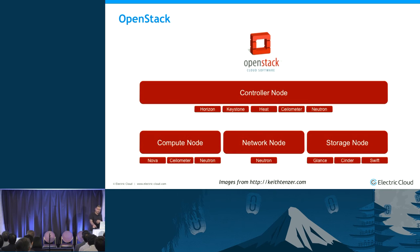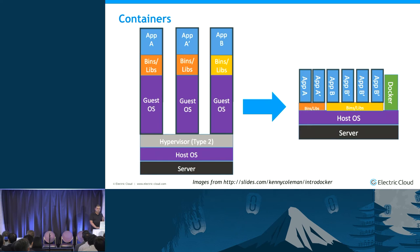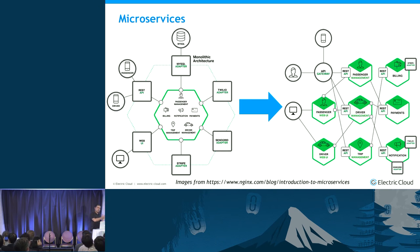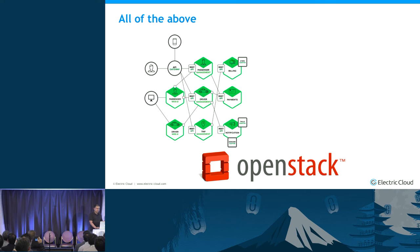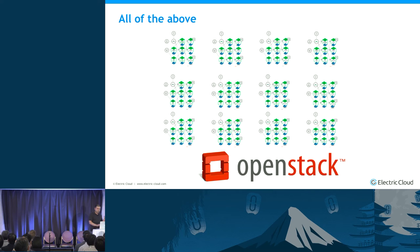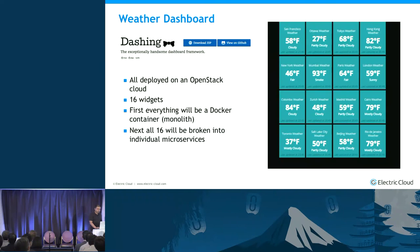I'm going to go step by step and talk about an application. We're all here because of OpenStack — so how do we combine these pieces? There's OpenStack, containers, and a monolithic app that's going to get turned into a microservices app. OpenStack is the substrate. The application I'm going to take from a monolith to a microservice is a dashboard — specifically a Dashing dashboard — and the entire dashboard will be deployed onto an OpenStack cloud.